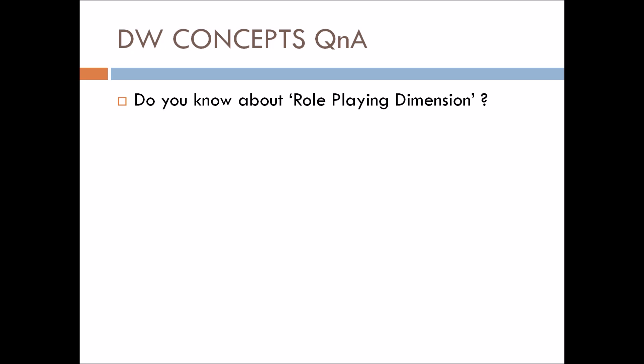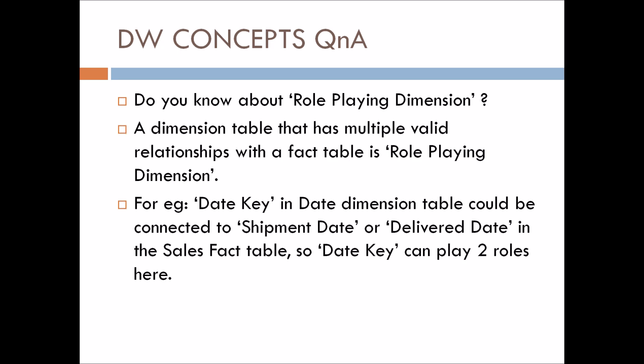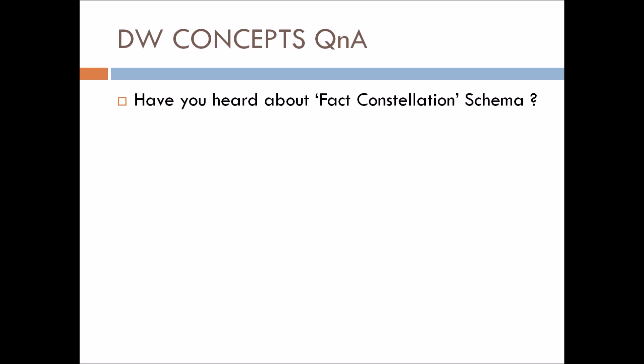Next question: do you know about role playing dimensions? A dimension table that has multiple valid relationships with the fact table is known as a role playing dimension. For example, a date key in a date dimension table could be connected to both the shipment date and the delivery date in a sales fact table — so the date key is playing two roles.